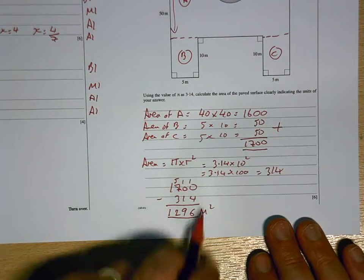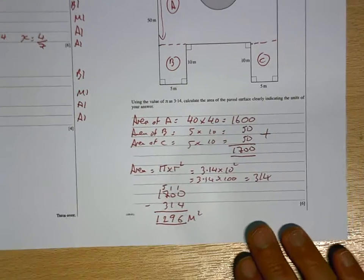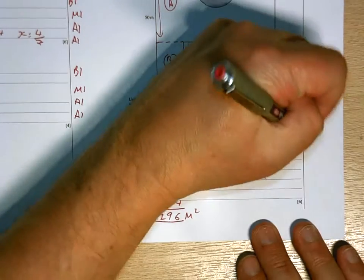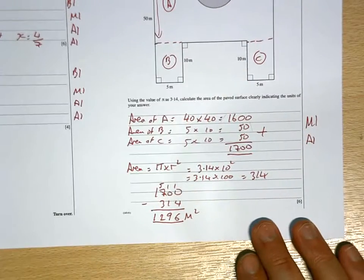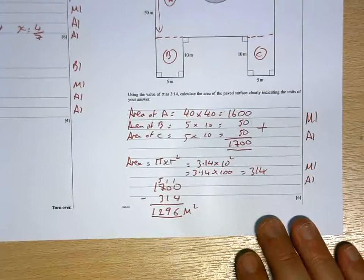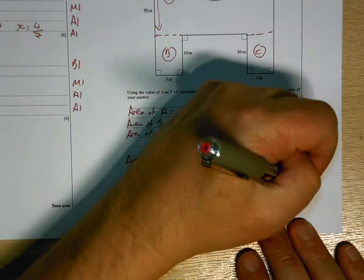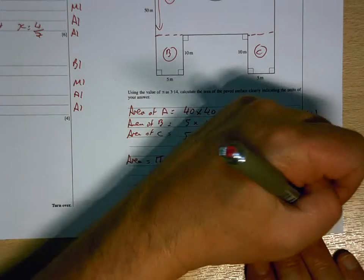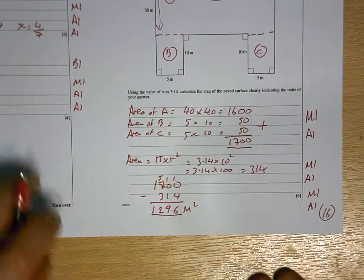Again, whatever method you use to subtract. So, you're going to have 2 marks for working out the 1700, 2 marks for working out the area of the circle and 2 marks for working out your final answer. Total for that page is 16. A lot of marks on that page.